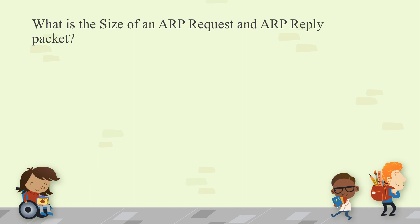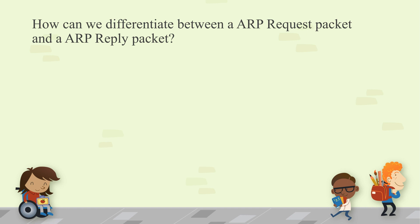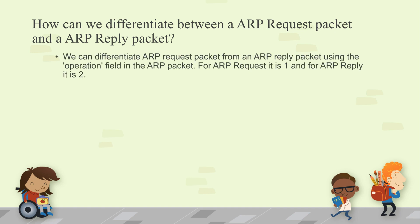What is the size of an ARP request and ARP reply packet? The size is 28 bytes. How can we differentiate between an ARP request and an ARP reply packet? We use the operation field in the ARP packet. For an ARP request the value is 1, and for an ARP reply it is 2. When capturing packets in Wireshark, if the operation field shows 1, it is an ARP request; if it shows 2, it is an ARP reply.